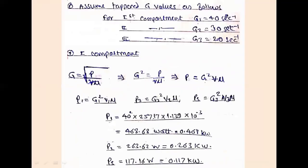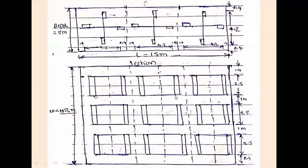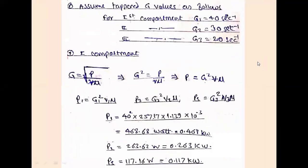Looking at the cross-section diagram, the total width of 10.3 meters is divided with 0.4 meters kept at the side, 1 meter clearance, and 2.5 meters for the blade length. The total depth arrangement includes 0.4 meters at top and 4.4 meters effective height. For the tapered flocculator, assume G values: G1 = 40 per second for compartment 1, G2 = 30 for compartment 2, and G3 = 20 for compartment 3.